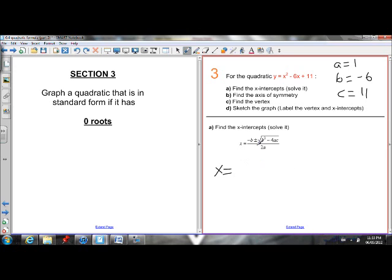So x equals negative negative 6, which is just 6, plus or minus b squared. Negative 6 squared is 36, minus 4 times a, times c, all over 2a.